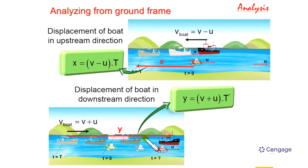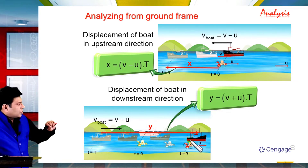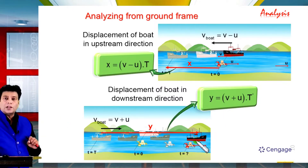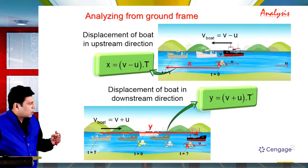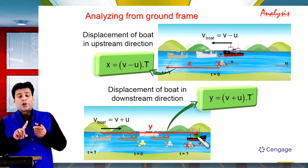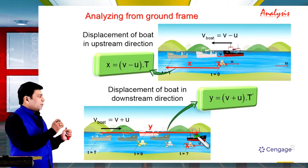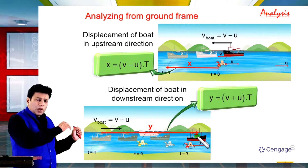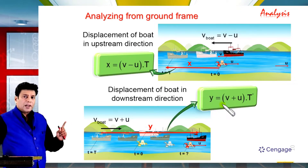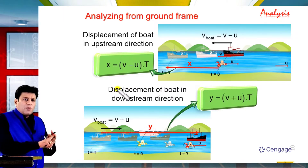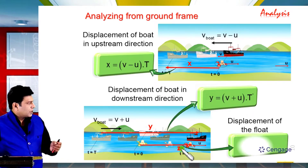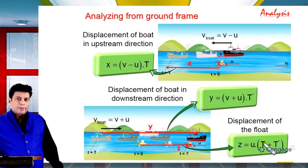Now consider the motion of the float. During the entire duration that the boat traveled upstream and then downstream — total time capital T plus t' — the float was also moving. The float's velocity is u, so the displacement of the float, let us call it z, equals u multiplied by (T plus t').